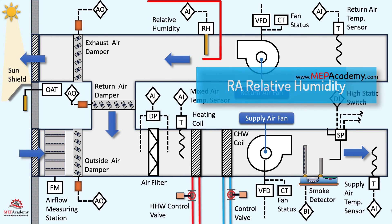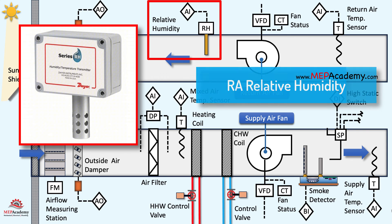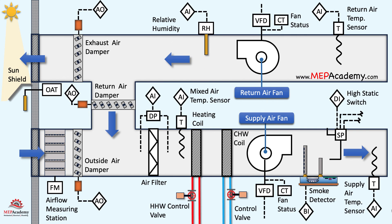The return air relative humidity sensor continuously monitors the relative humidity level of the air being drawn back into the HVAC system from the occupied spaces. The feedback from the sensor is essential for the control system to adjust the operation of humidification or dehumidification elements, such as steam humidifiers or cooling coils, to achieve the set point relative humidity. This control is crucial for maintaining a comfortable and healthy indoor environment.